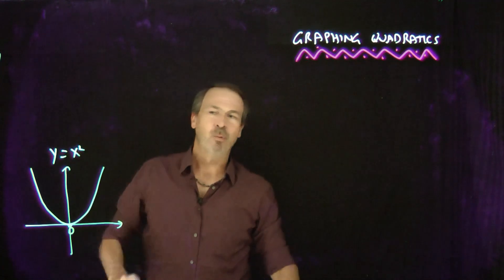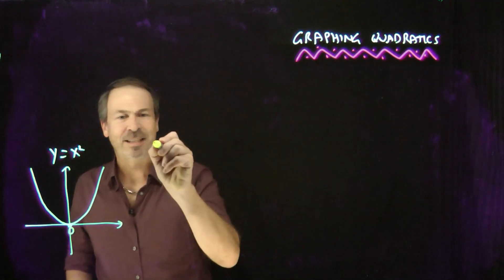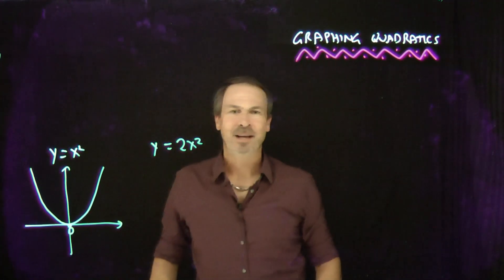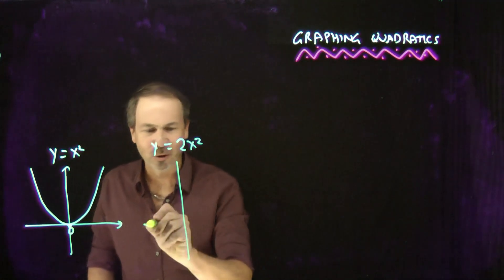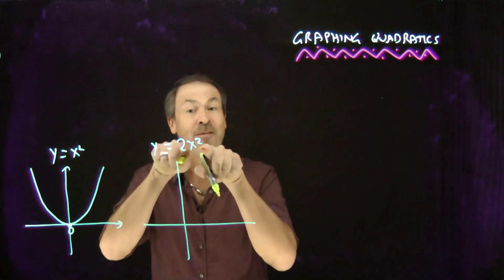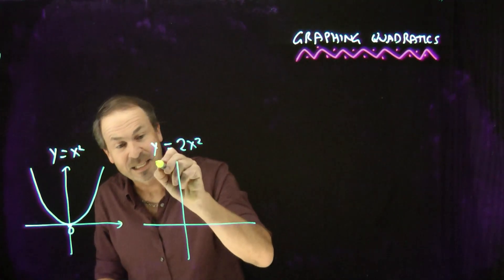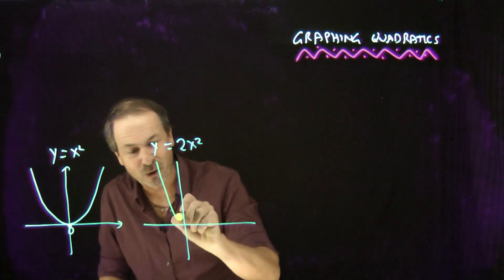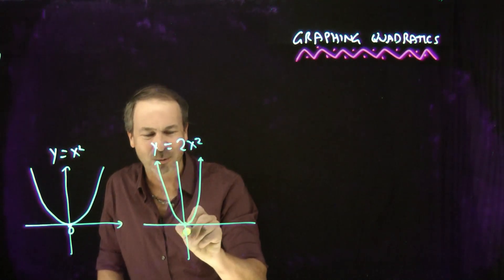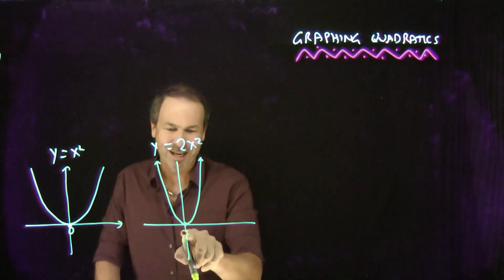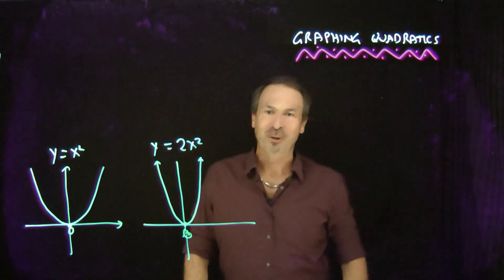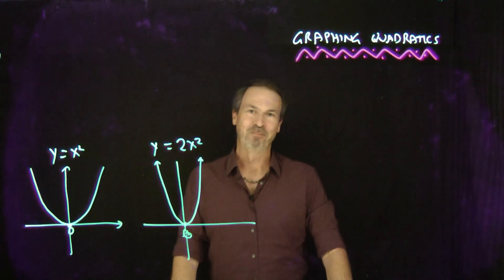Then we started playing with the steepness of these things. We graphed things like y equals 2x squared, and we saw that it's still a symmetrical U-shaped graph, but now it's going to be a bit steeper — in fact, twice as steep in some sense. It's a steeper symmetrical U-shaped graph, but still all the action is happening at x equals 0.